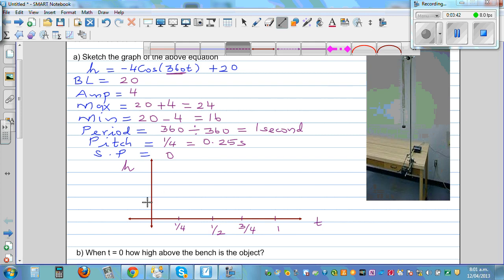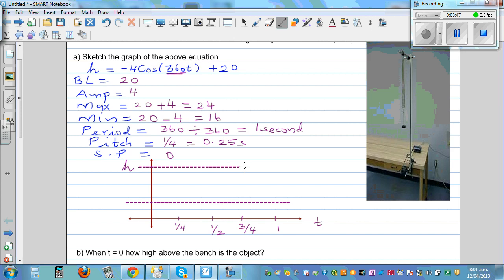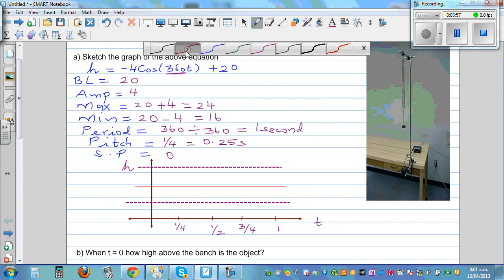So you know this is your minimum, this is your maximum, and this is your baseline somewhere between. Now it is a negative cosine graph. A negative cosine graph starts at the minimum, because it flips over. So this is baseline, minimum, baseline, maximum, baseline, and minimum.